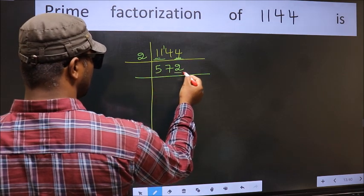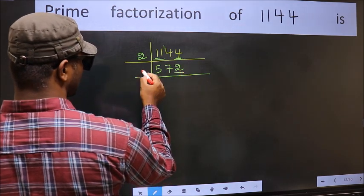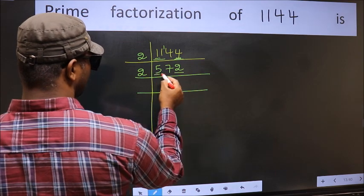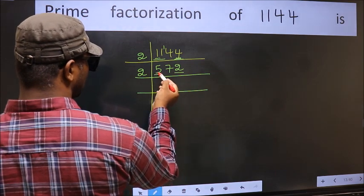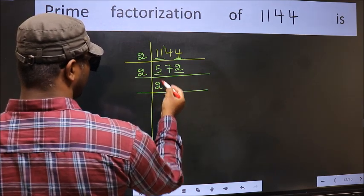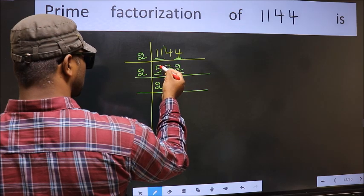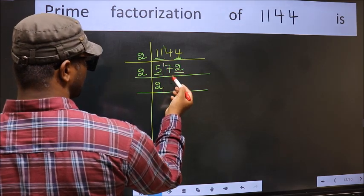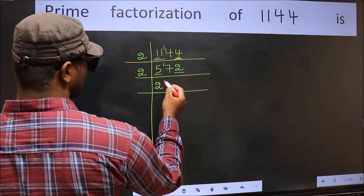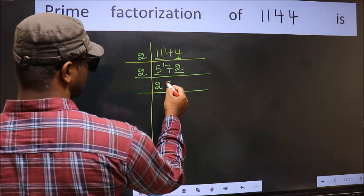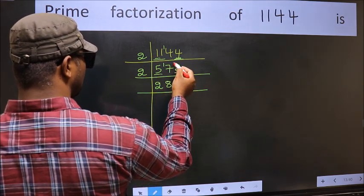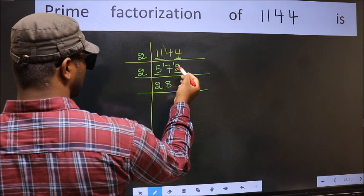Now here, the last digit is 2, which is even, so take 2. The first digit is 5; a number close to 5 in the 2 times table is 4. 5 minus 4 is 1; 1 carried forward, giving 17. A number close to 17 in the 2 times table is 16. 17 minus 16 is 1; 1 carried forward, giving 12.